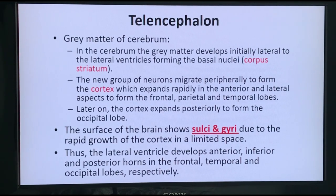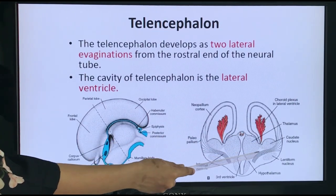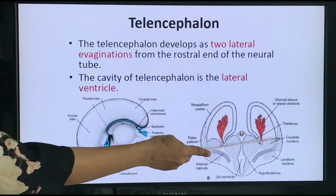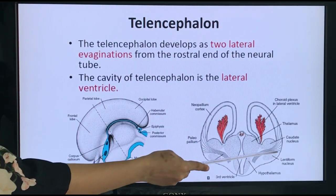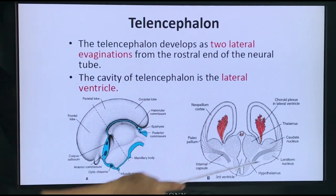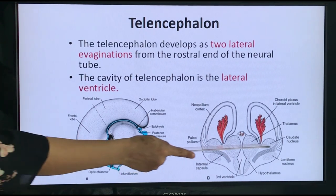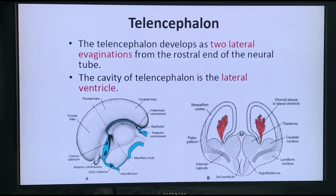The corpus striatum undergoes more and more proliferation, expanding dorsally. Later, there will be development of axon fibers that separate the corpus striatum into two masses. The one lying dorsomedially will be the caudate nucleus, and ventrolaterally there will be the lentiform nucleus. The fibers separating these two nuclei form the internal capsule. Due to the further expansion of the corpus striatum, the bundle of axon fibers called the internal capsule separates it into the caudate nucleus medially and lentiform nucleus laterally.